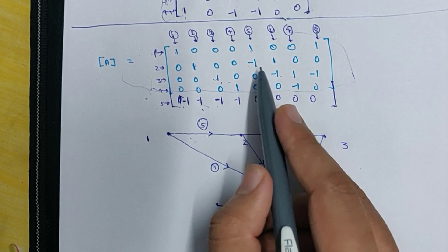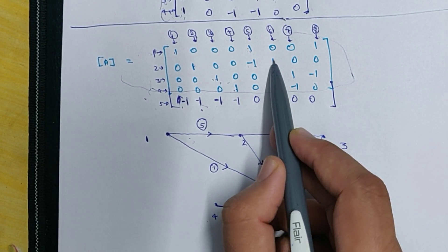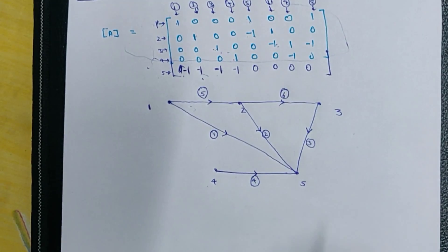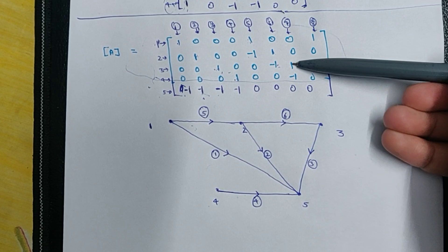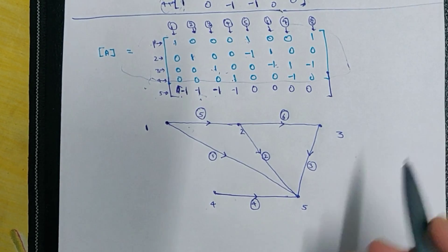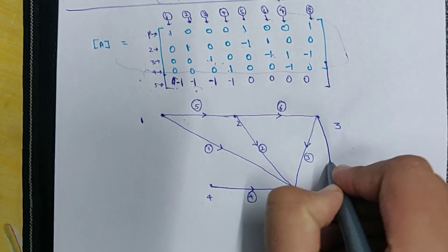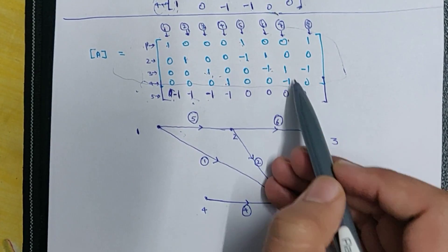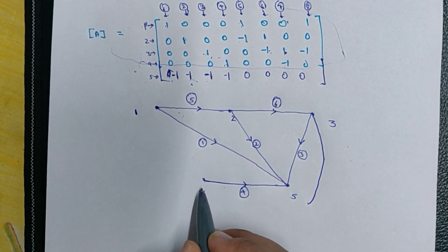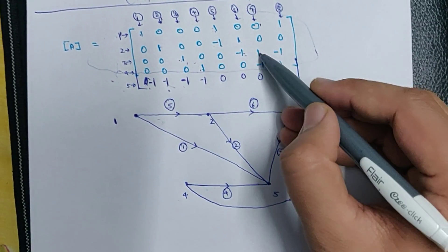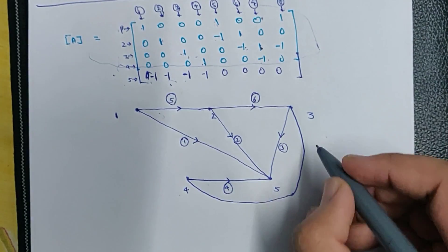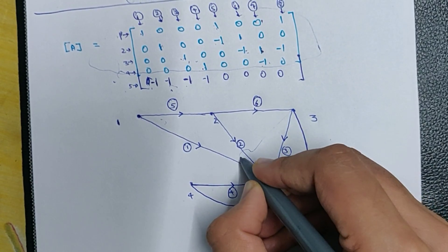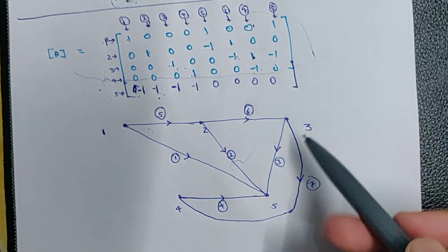This is the sixth branch. For the seventh branch, it is from node 3 to node 4. So we draw it from node 3 to node 4. The current is flowing from 3 to 4, therefore the direction of current will be like this. You can also draw the branch using overlapping, but I've drawn it this way to avoid confusion for beginners.